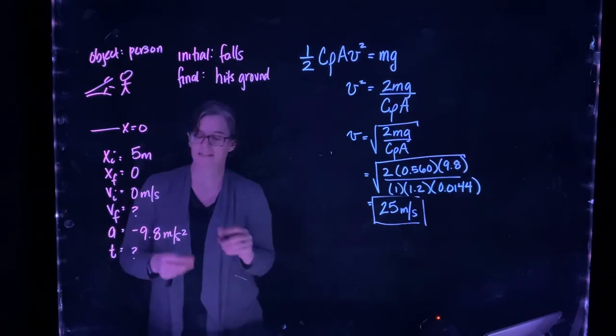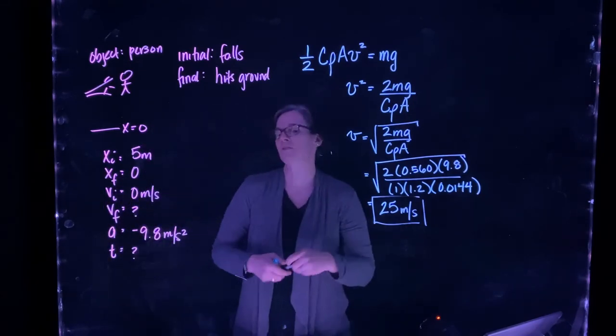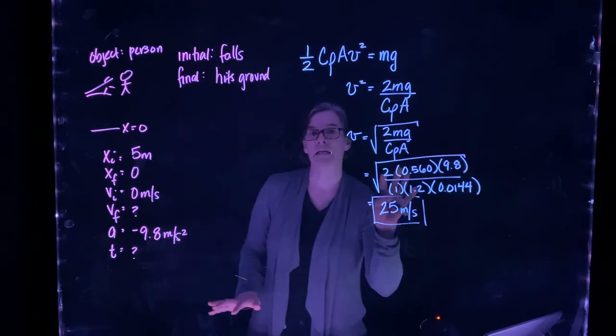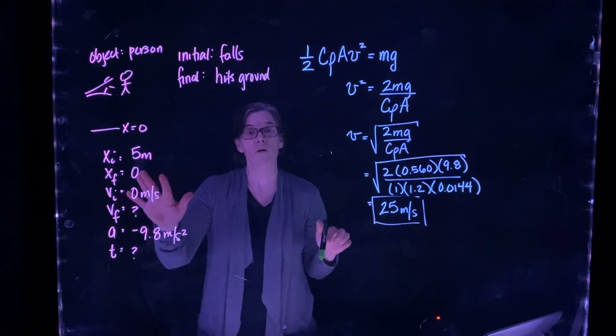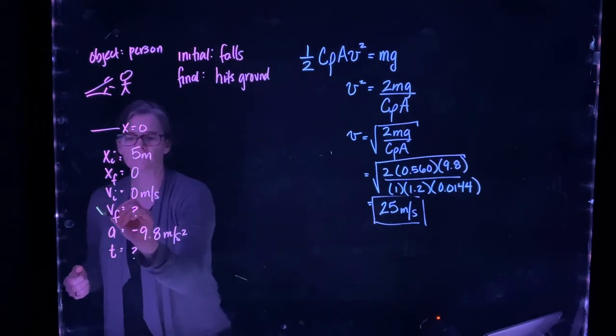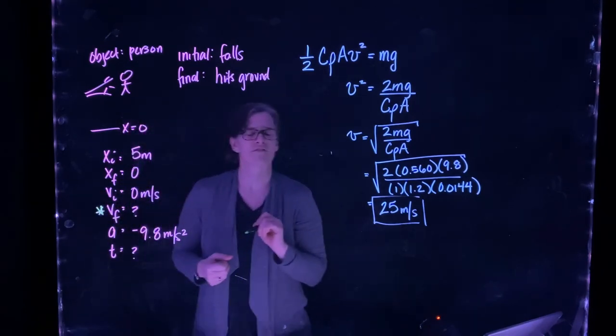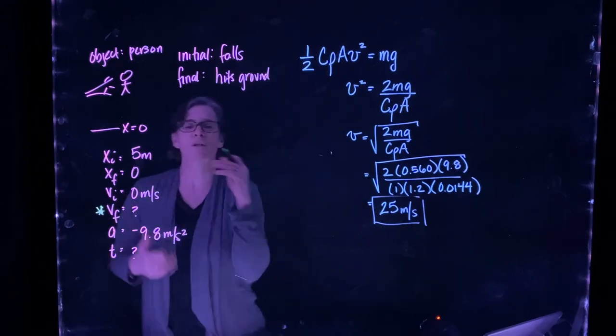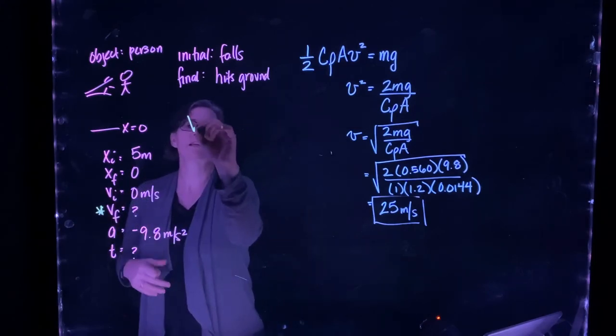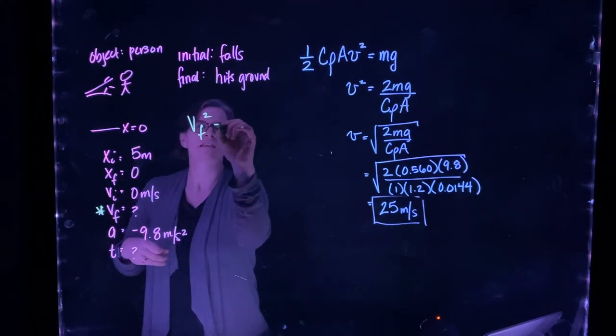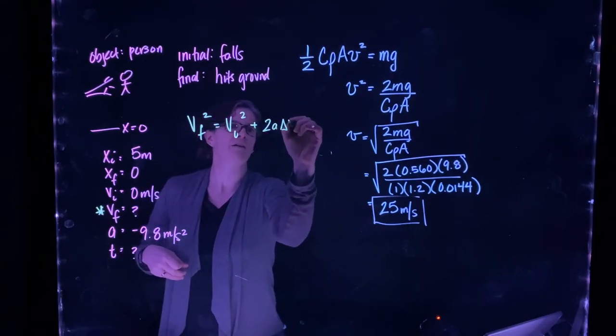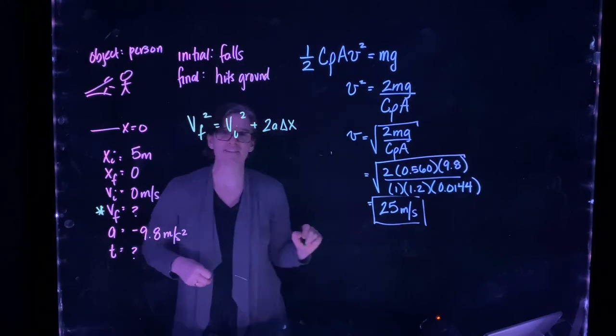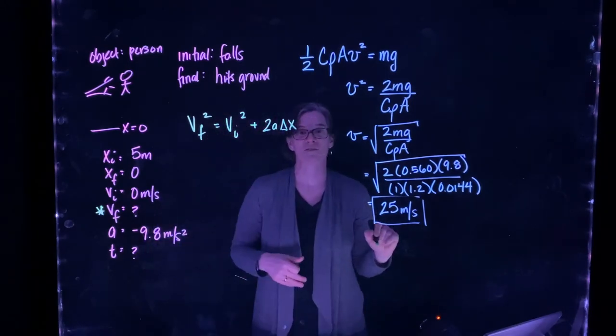We don't know how long it takes. We're interested in that final velocity. So we look through our equations. We can find that this relationship, v final squared equals v initial squared plus 2a delta x, is going to be the one that serves us best.